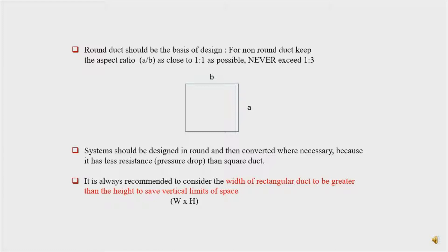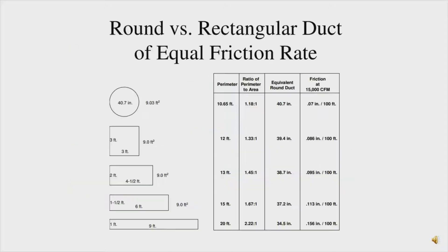In round duct, due to the round cross-section it has lower resistance, which is why the pressure drop is lesser, and therefore the price of the round duct is higher. The second rule: normally the width of the rectangular duct should be greater than the height if we have enough space, because if the width is greater than the height then the duct is more stable. Unless we don't have enough space, then the height can be greater than the width.